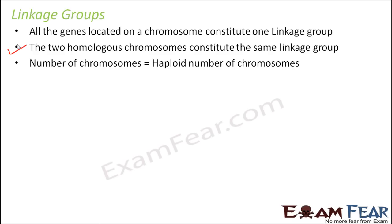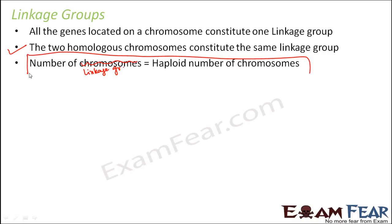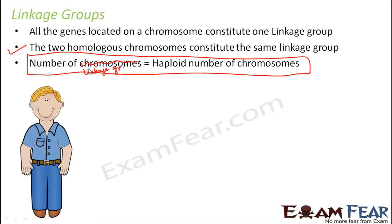For example, if you consider human beings — the number of linkage groups is going to be equal to the haploid number of chromosomes. So if you take the example of human beings, how many total chromosomes do we have? We have 46 chromosomes in total, giving us 23 pairs of homologous chromosomes.